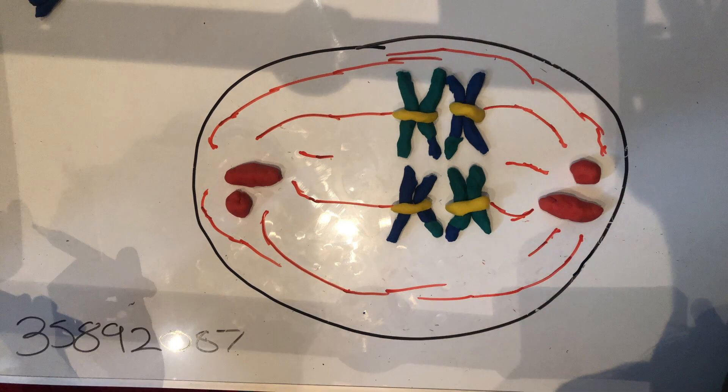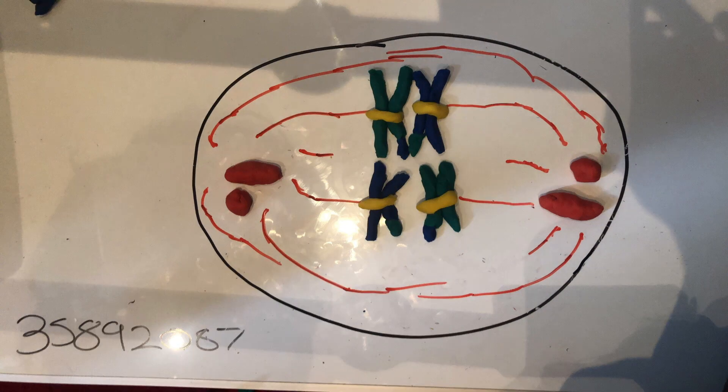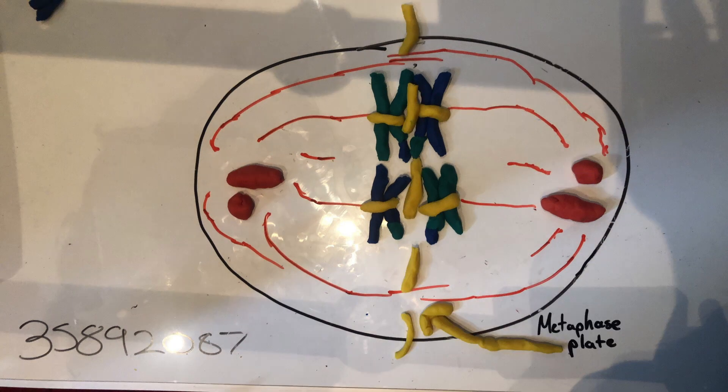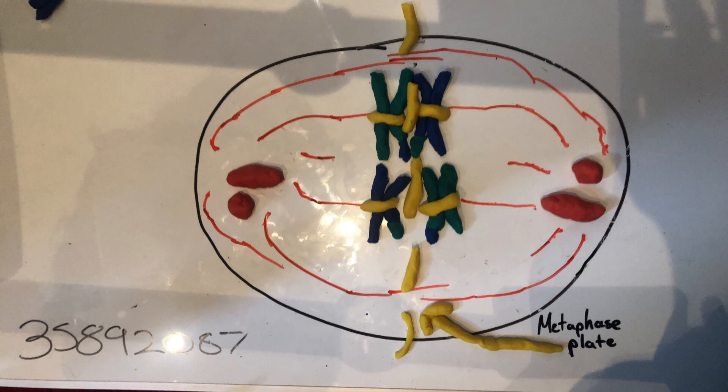During metaphase 1, the pairs of homologous chromosomes, now as tightly coiled and condensed as they will be in meiosis, become arranged equidistant from either pole of the cell on the metaphase plate. Through independent assortment, this alignment is completely random, which allows for great genetic diversity.